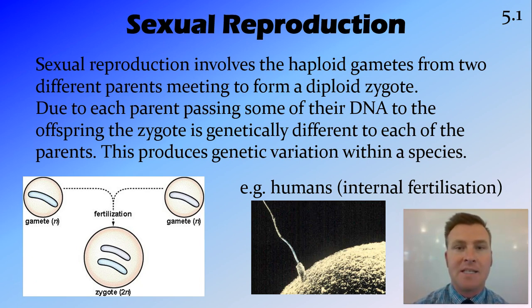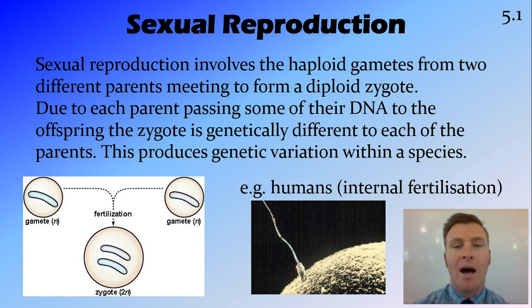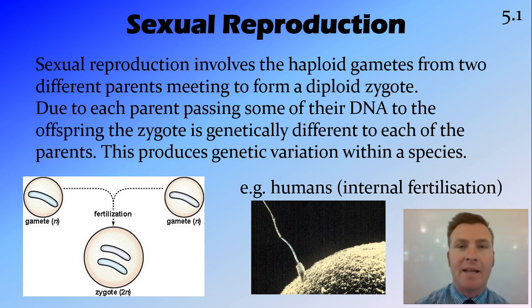A zygote is a fertilized egg, and it is diploid. It's got half the DNA from the mother and half the DNA from the father, and that combination forms the zygote.